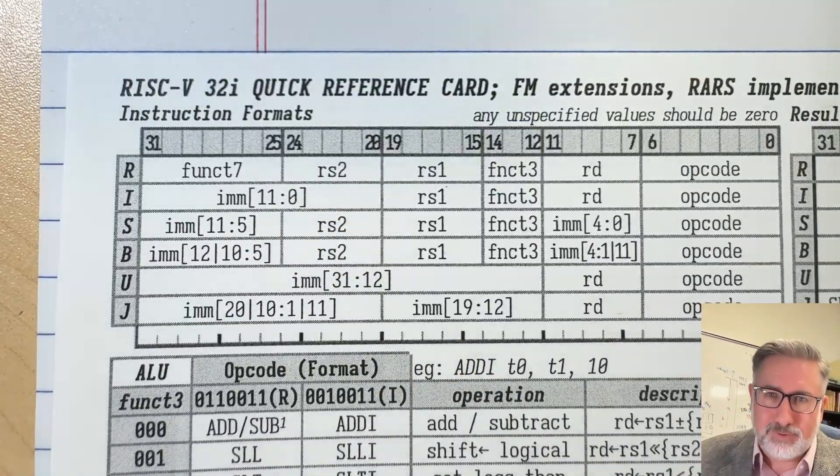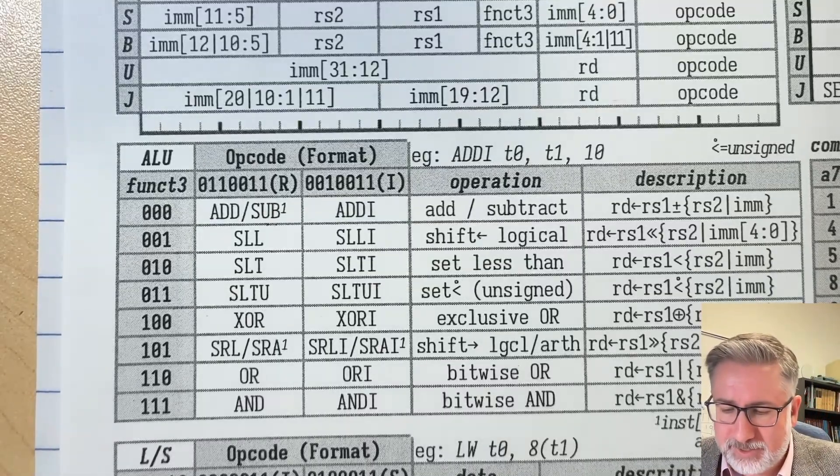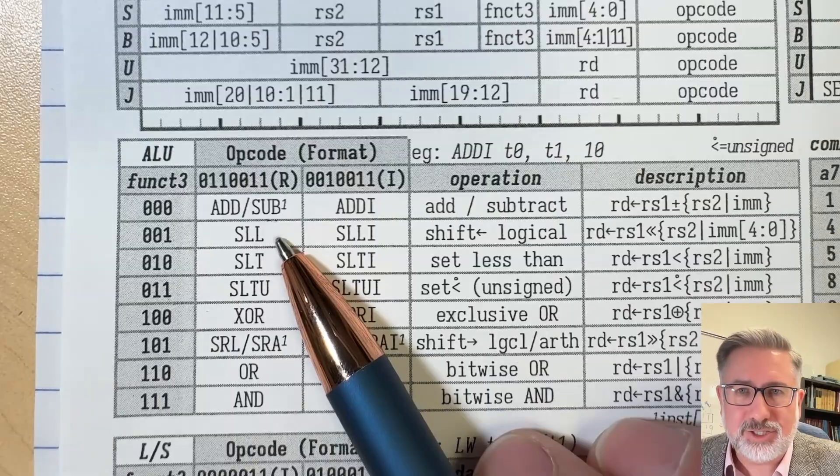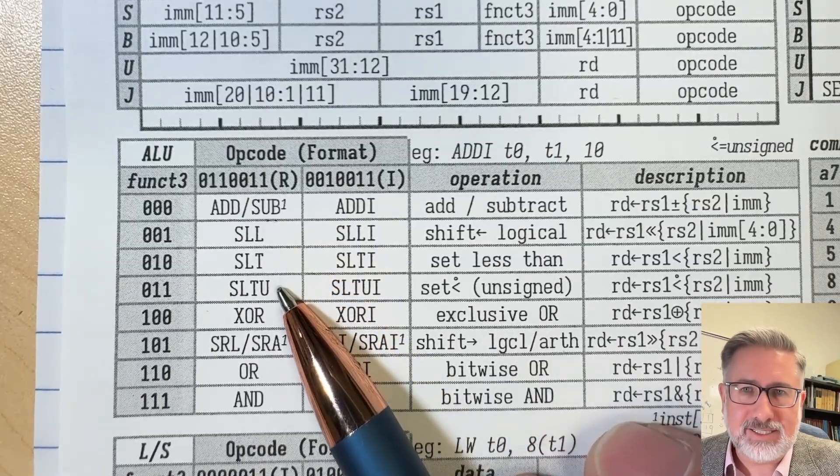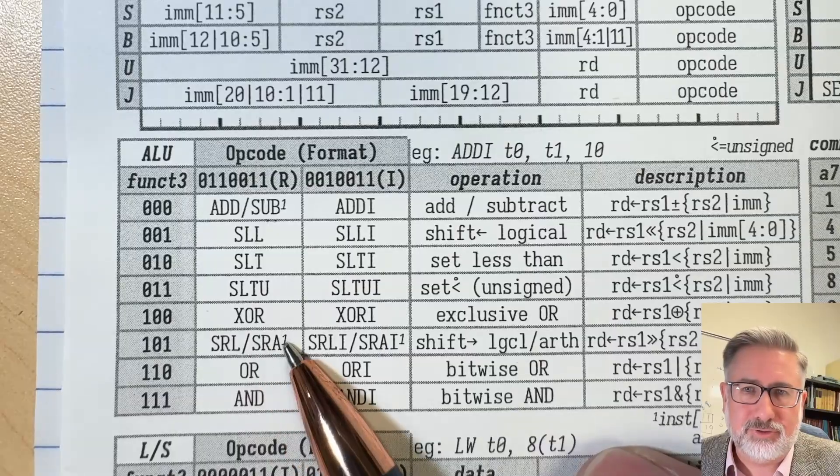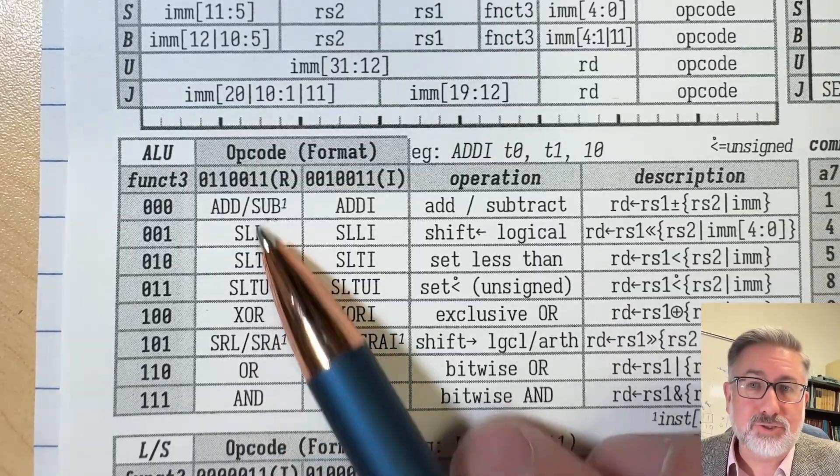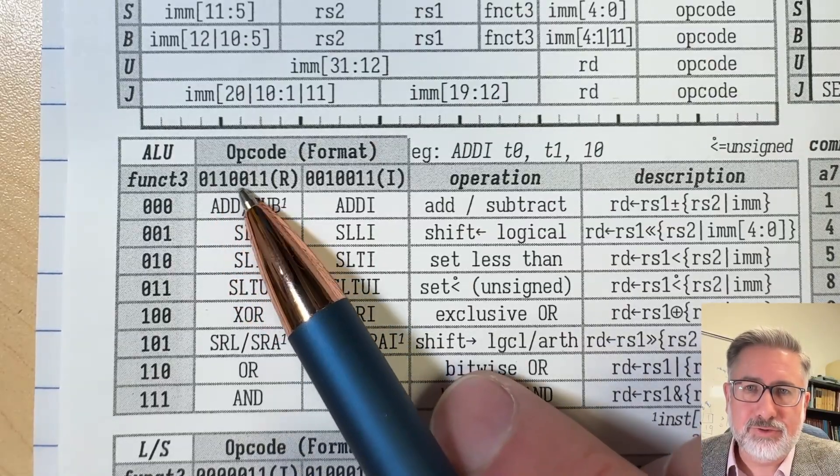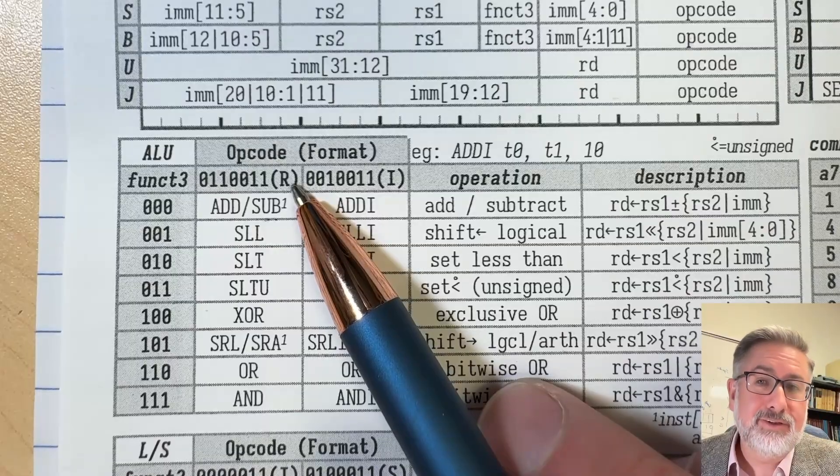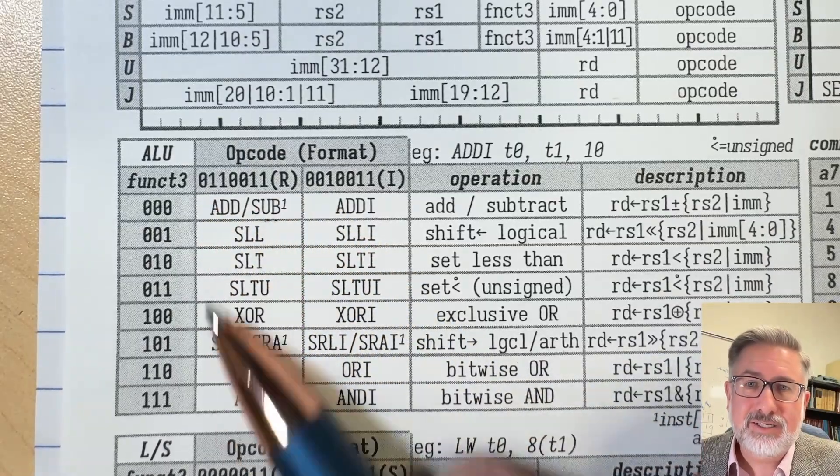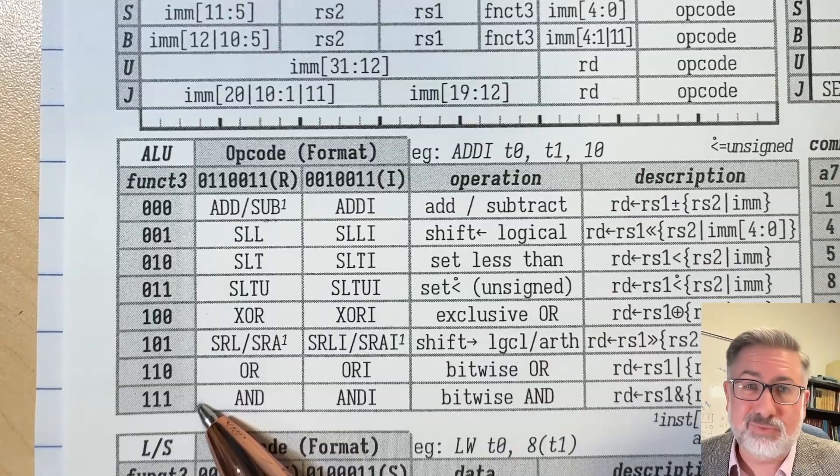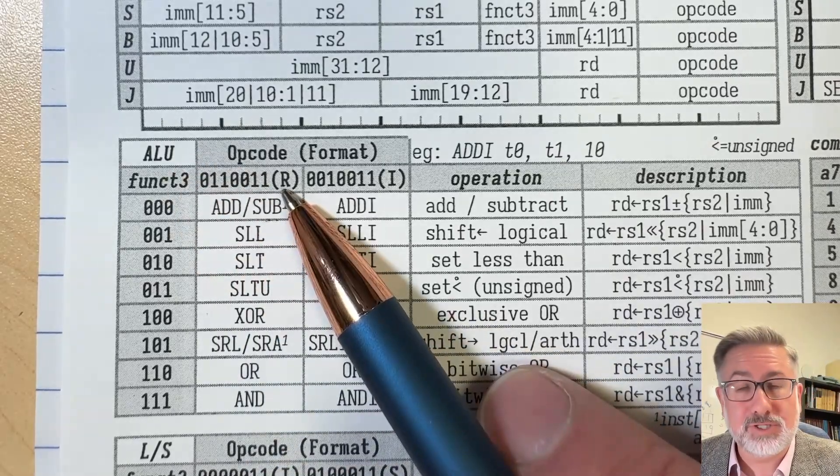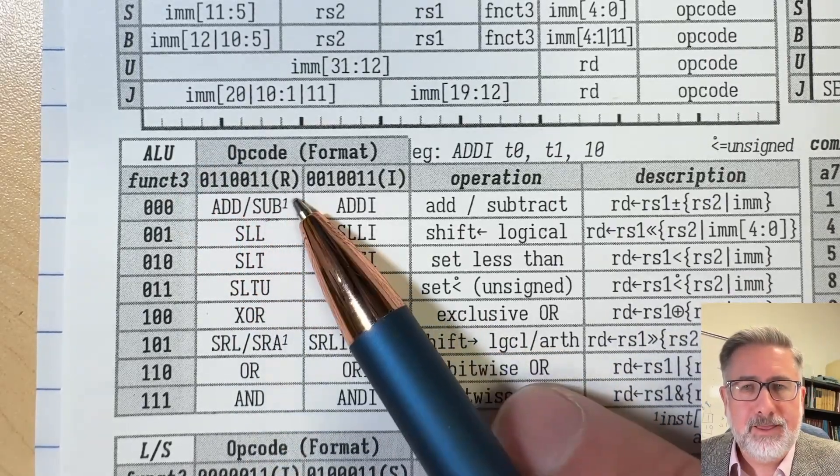So let's look at some examples. If we're going to do add or subtract, here is add or subtract. The opcode for any of these - add or subtract, shift left logical, set less than, set less than unsigned, exclusive or, shift right logical or arithmetic or, and these are sort of all typical ALU instructions - they all have the opcode 0110011. They're all R format. And then function 3 tells us what specific we're doing, what thing we're doing that is the specific kind of data processing instructions. So ALU instructions, data processing instructions, 0110011 is all of these.